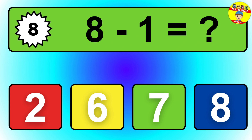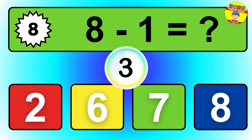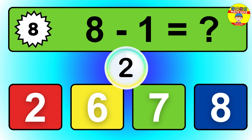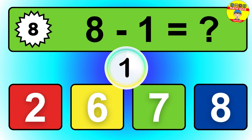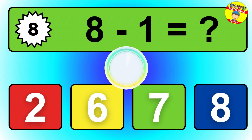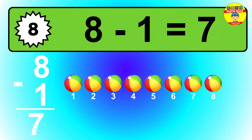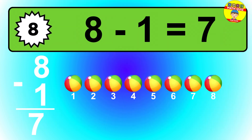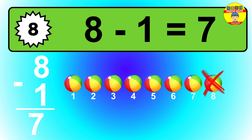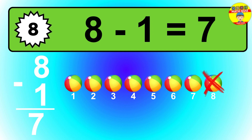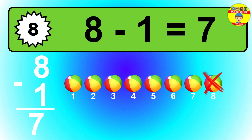Question 8. 8 minus 1 equals what? So the answer is 8 minus 1 is 7. Let's count it: 1, 2, 3, 4, 5, 6, 7.